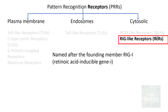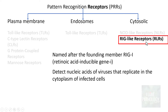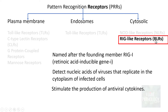RIG-like receptors are named after the founding member RIG-1, or retinoic acid-inducible gene. They recognize nucleic acids of various viruses that replicate in the cytoplasm of infected cells. Once they recognize these nucleic acids, they stimulate production of antiviral cytokines to tackle those viruses and also induce fever.